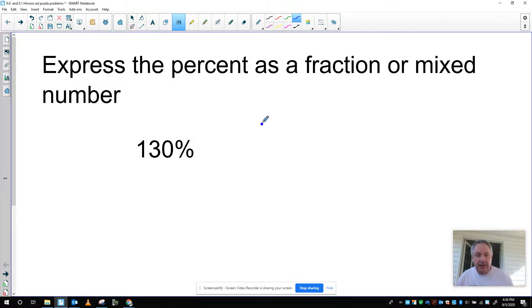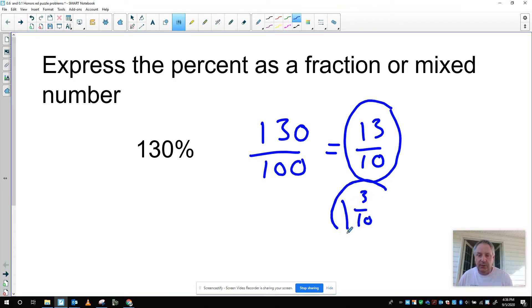So 130% means 130 out of 100. You can reduce, divide each by 10. 13 out of 10. The question says there's a fraction or a mixed number, so this would be correct. A mixed number would be 1 and 3 tenths. So we'll go with the mixed number for this one since it does say a mixed number.